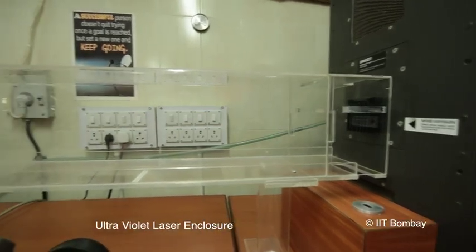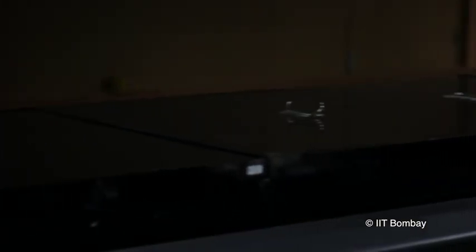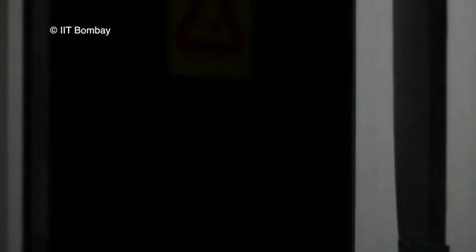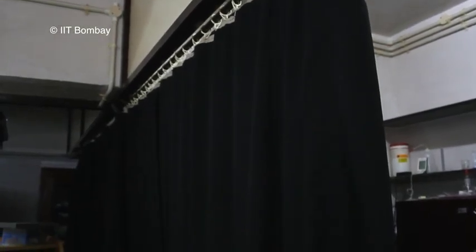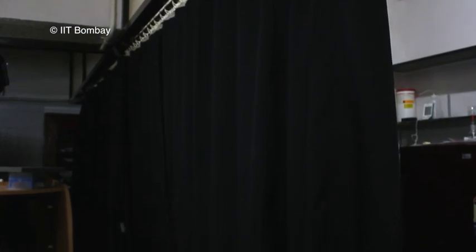Enclose the laser beam wherever possible if you are working with Class 3B and Class 4 lasers. All windows and doors in the laser room must be made opaque if the laser beam exposure can be a hazard to personnel outside the room. Use laser curtains or partitions to safeguard visitors.